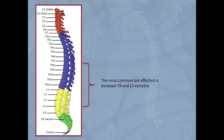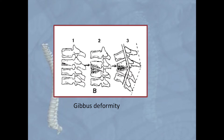TB most commonly affects the vertebrae between T8 and L3. The infection generally starts in the anterior part of the vertebral body in the region of the disc. It then spreads behind the anterior ligament to involve the adjacent vertebral body. This destruction causes anterior collapse, while posterior elements are not involved. An angular deformity of the spine can develop — a short, sharp angle kyphosis called a gibbous.